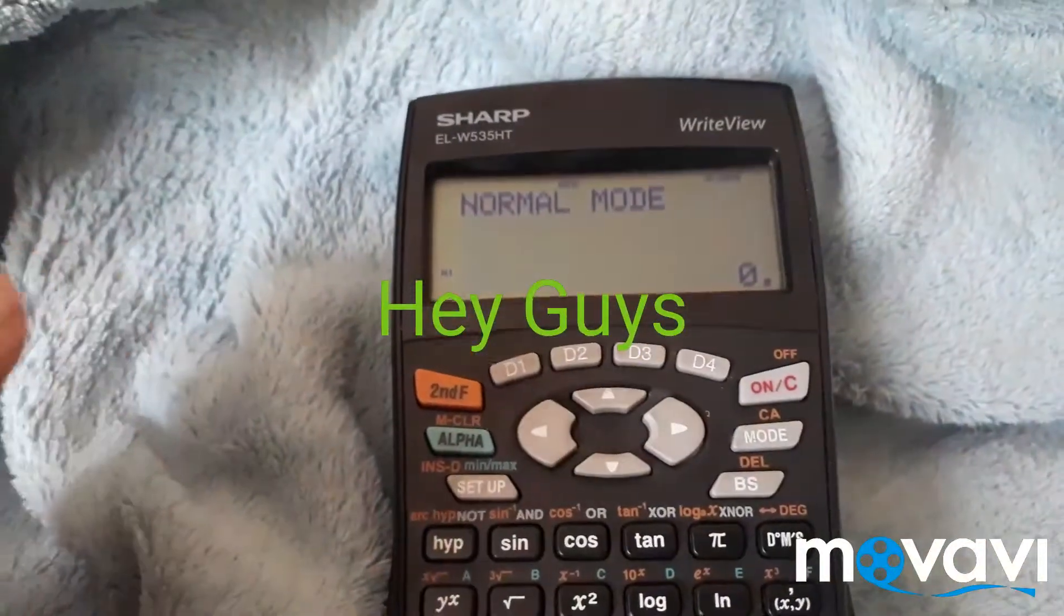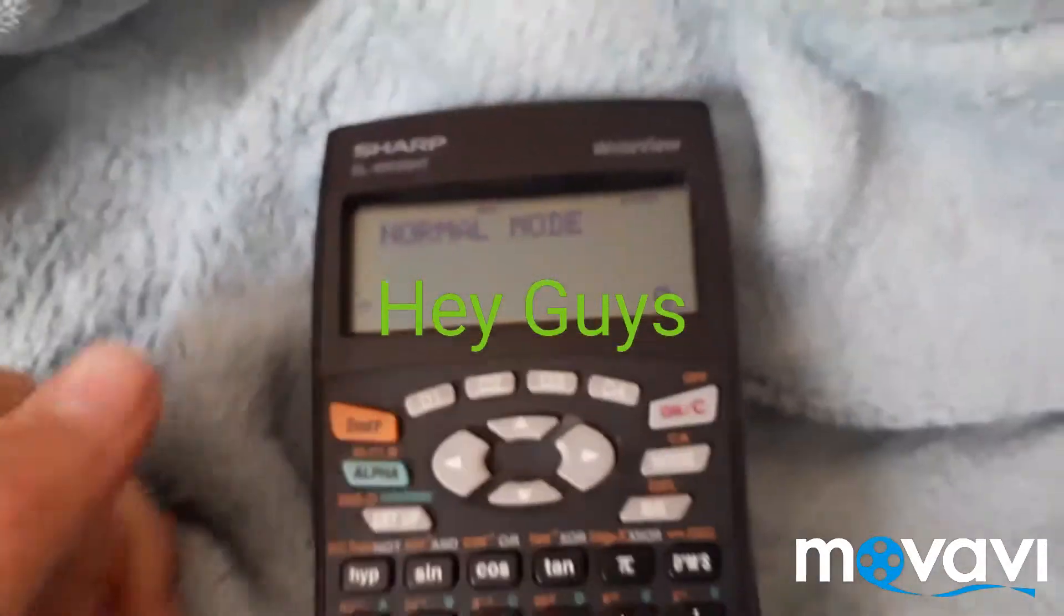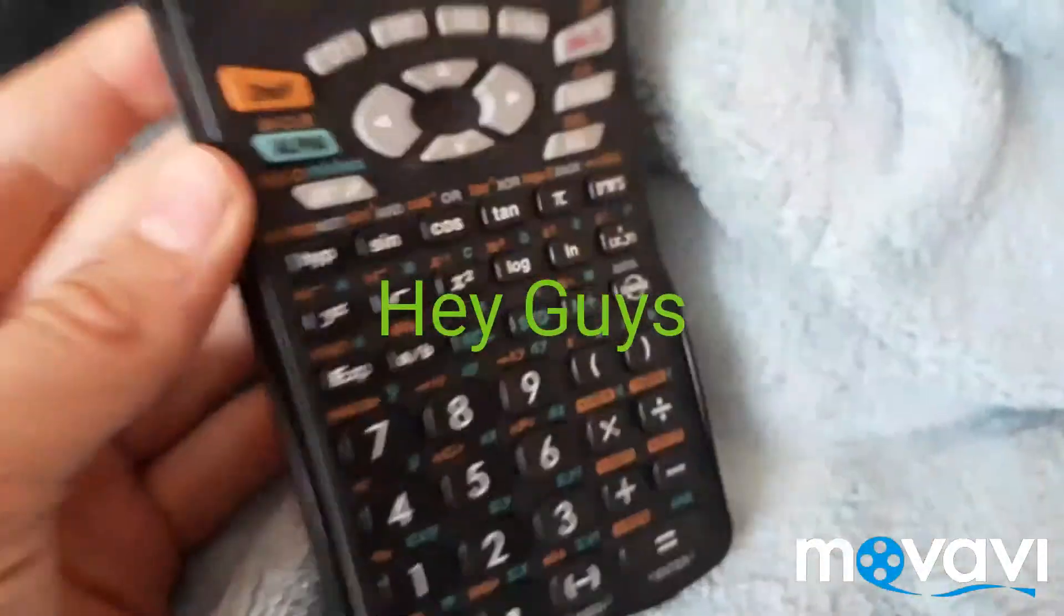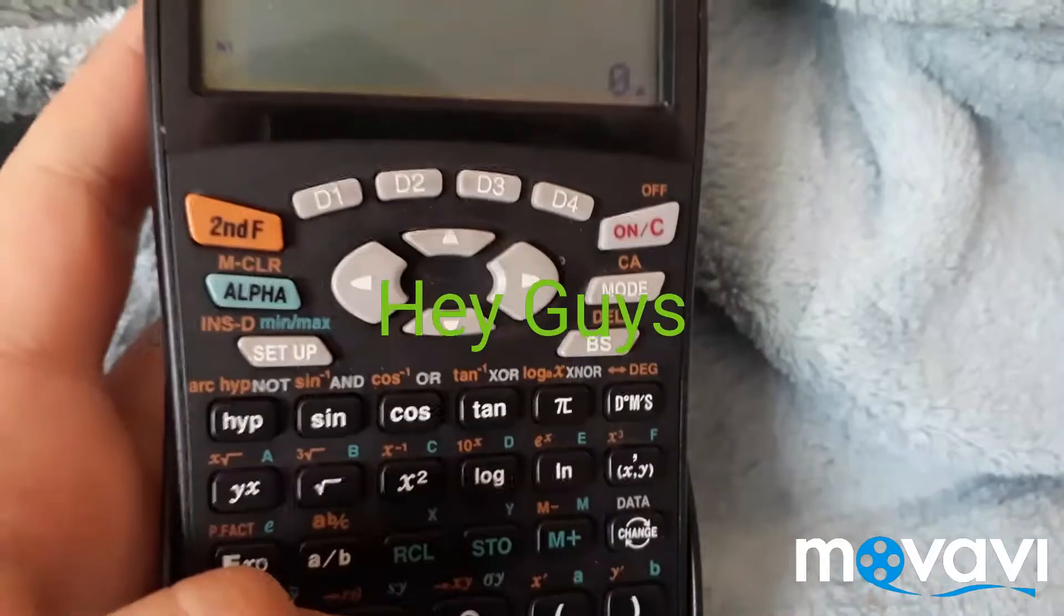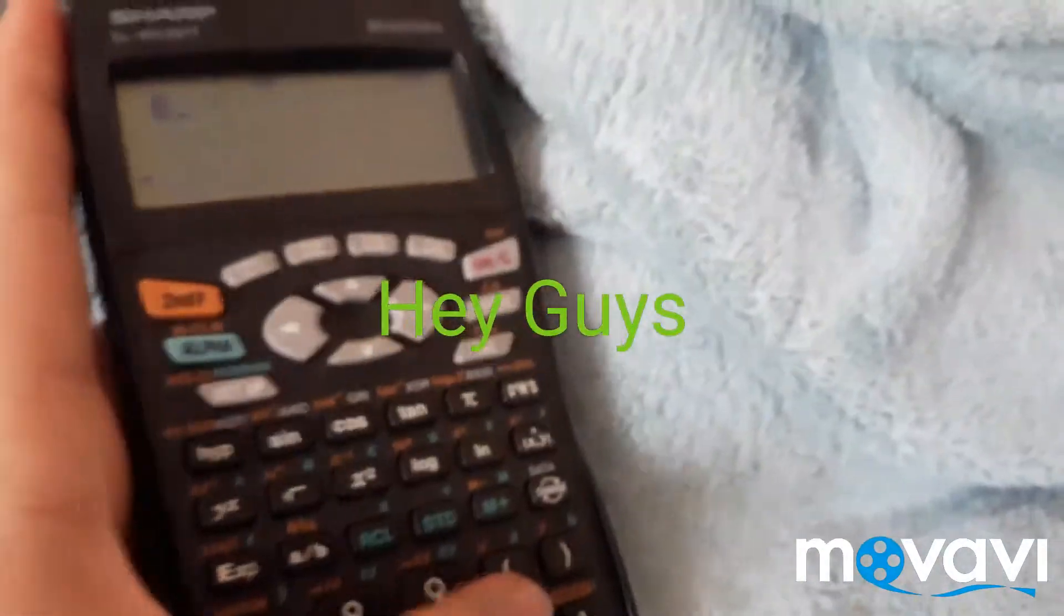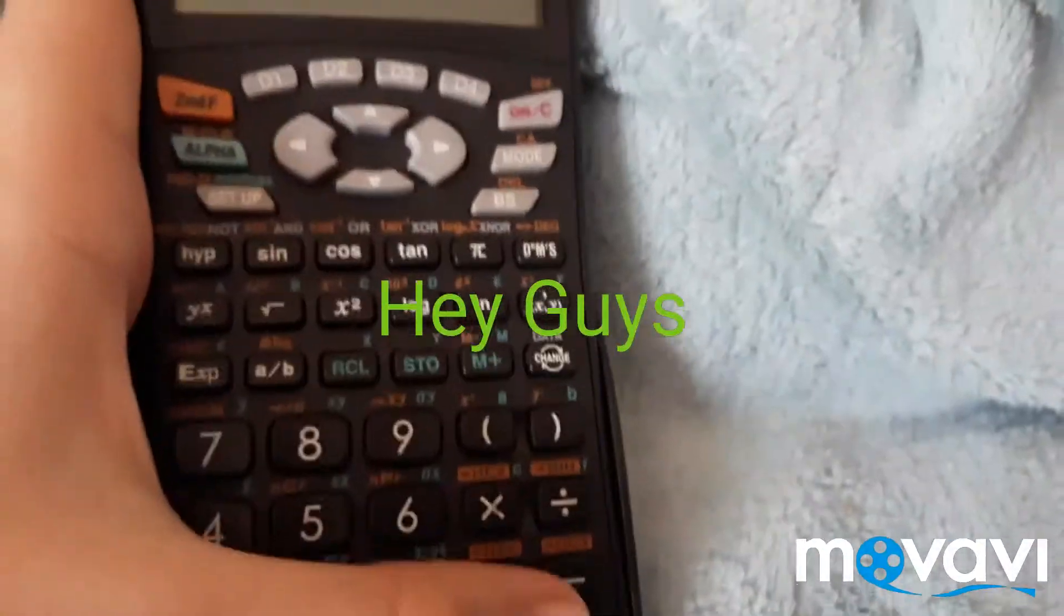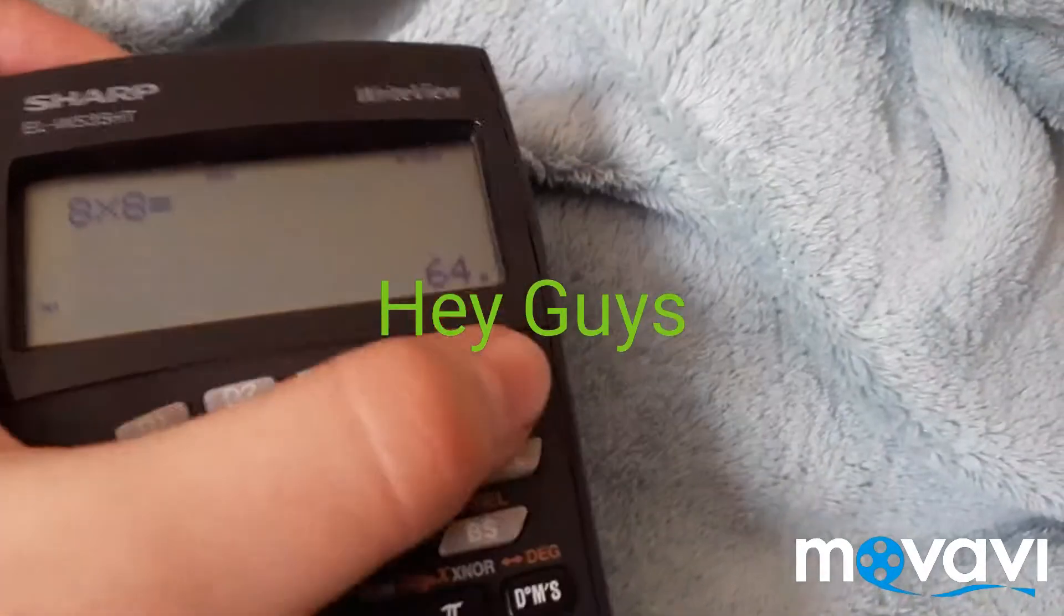Alright, as we carry on, I want to start off by showing you basic tricks. So 8 times 8, which is 64, which is obvious.